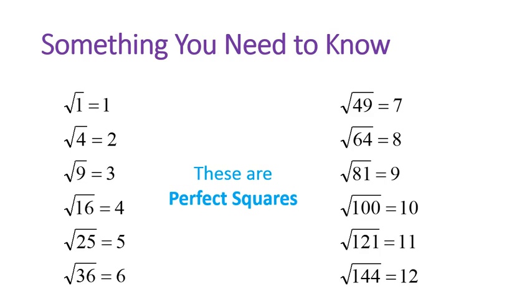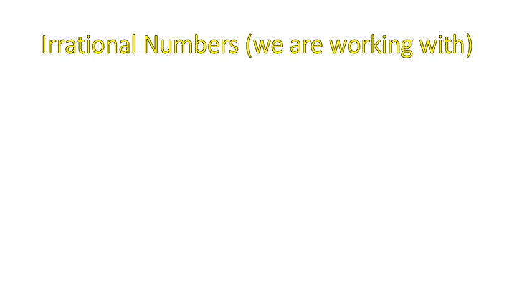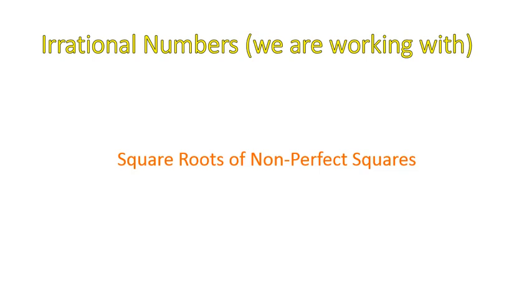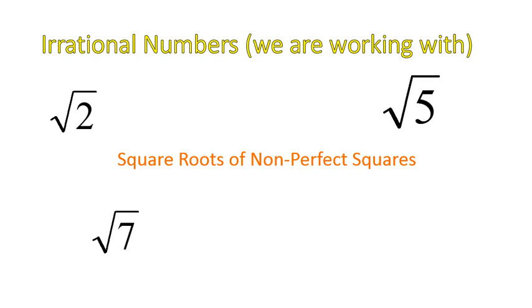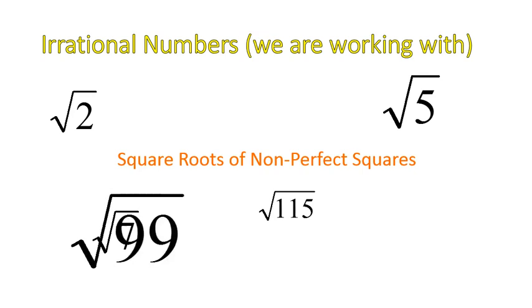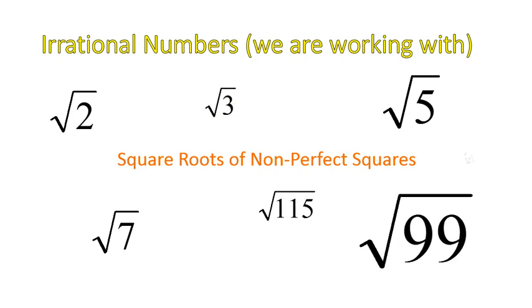These numbers should be familiar to you — they are referred to as perfect squares. These are numbers that multiply perfectly together to give you a perfect square. So 6 times 6 is 36, and the square root of 36 is equal to 6. You'll need to be familiar with those. The other thing you need to know is what irrational square roots look like — square roots of non-perfect squares, or basically square roots of any number that was not on that previous list.